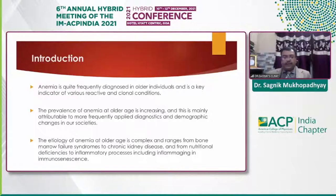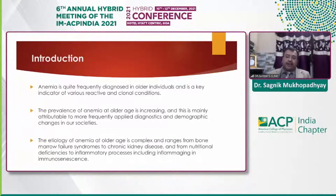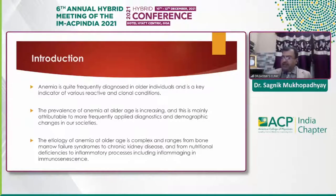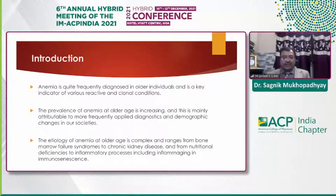The prevalence of anemia at older age is increasing and is mainly attributable to more frequently applied diagnostic and demographic changes in our society. The increased incidence of anemia with aging has led to speculation that lower hemoglobin level may be a normal consequence of aging. However, there are at least two reasons for considering anemia in elderly as a sign of disease rather than a senescent presentation. First, most older people maintain a normal red cell count, hemoglobin, and hematocrit level throughout their life. Second, in most elderly patients an underlying cause of anemia is found for hemoglobin levels less than 12 g/dL. The etiology is complex, ranging from bone marrow failure syndromes to chronic kidney disease, and from nutritional deficiencies to inflammatory processes leading to inflammation and immunosenescence.